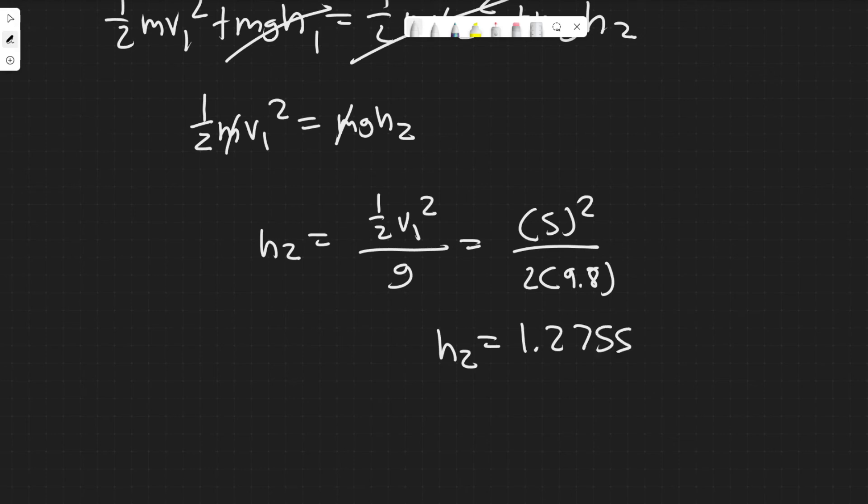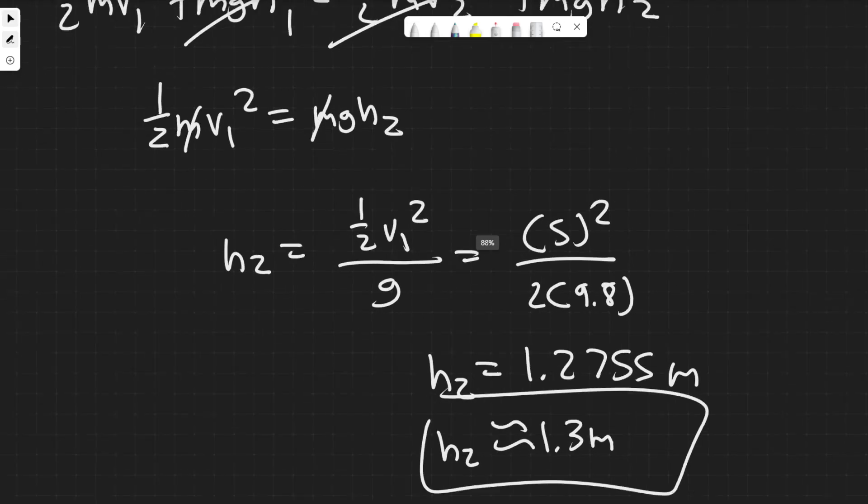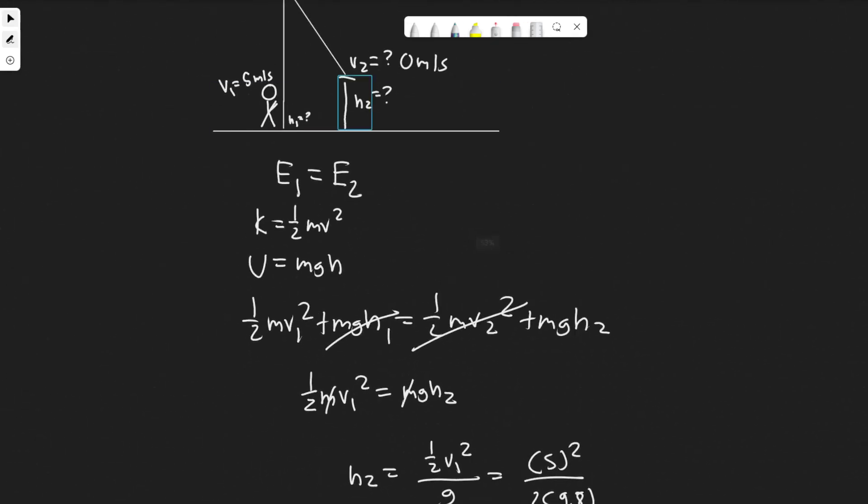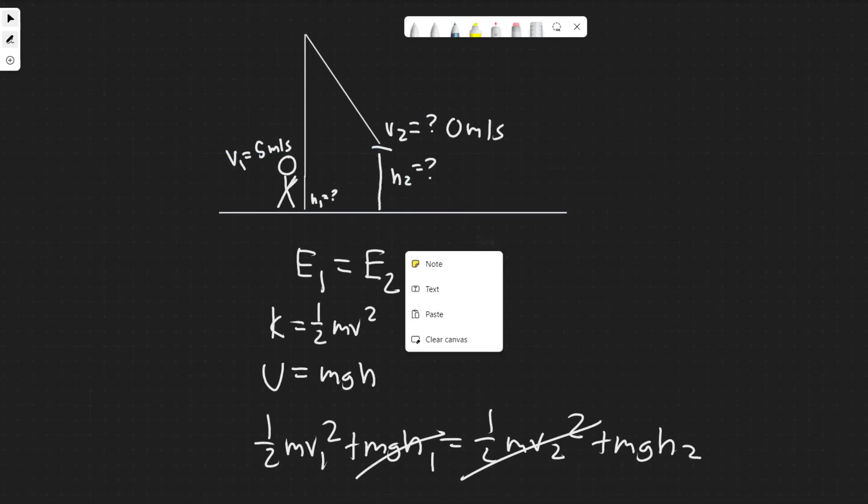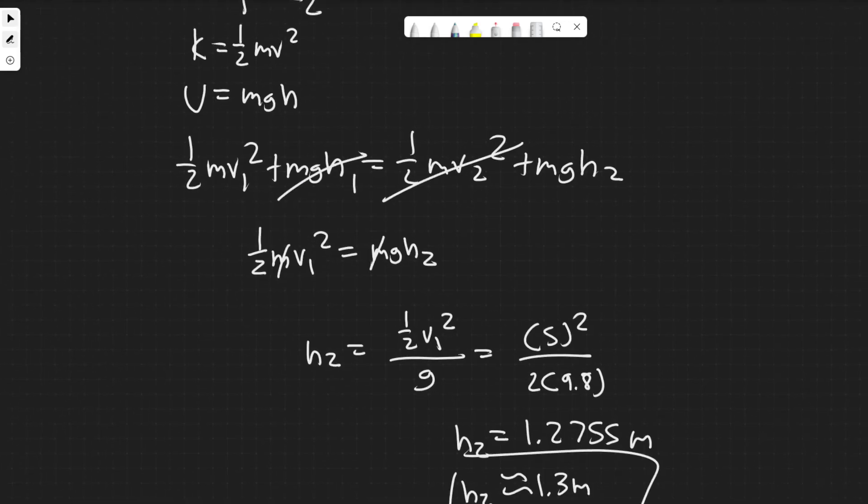And so keep in mind, we measure height in meters. So you can round this however you want. You can say 1.3 meters. So basically the maximum height they're going to reach is going to be 1.3 meters in the air. So this distance, 1.3 meters. And yeah, so this is going to be your answer.